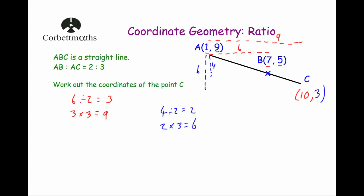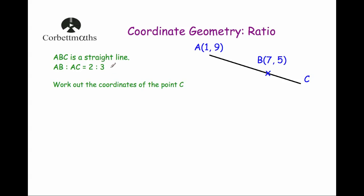Now there's another way to approach this question. We can consider the ratio directly: AB to AC is 2 to 3, meaning from A to B is two parts and the whole way is three parts. So from A to B is 2 and from B to C is 1 — because if the whole way is 3 and A to B is 2, this extra bit is 1 part. That means the distance from B to C is half the distance from A to B.